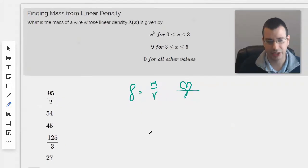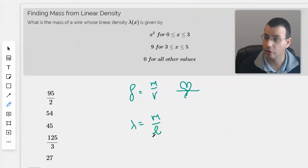For linear density, it's linear density equals mass per unit length, or x.